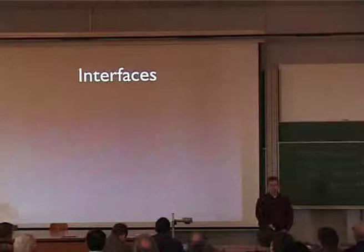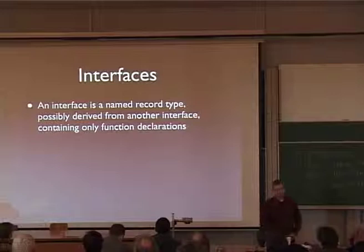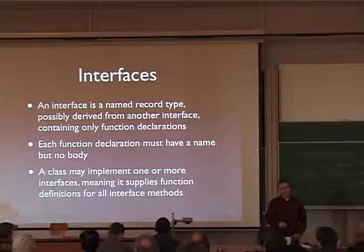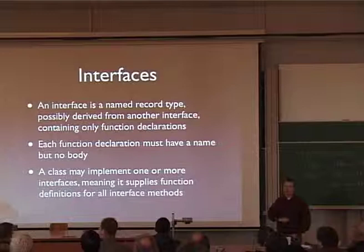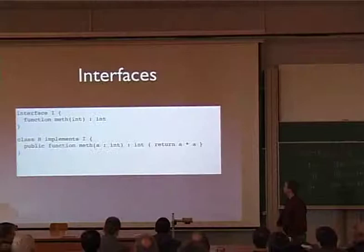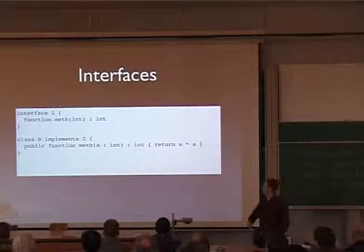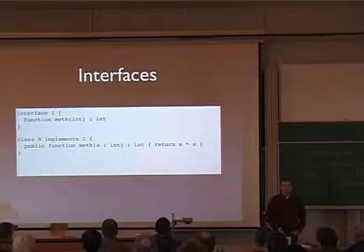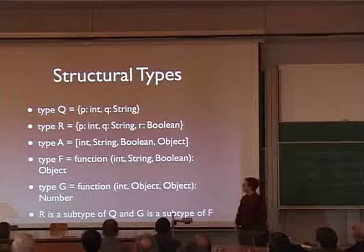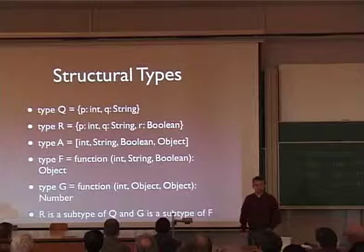Interfaces are like classes except there's no implementation. The key difference — very similar to Java — is that any class can only extend one other class, but can implement multiple interfaces. So with an interface, you're trying to define a contract. You're not defining any implementation of how it actually works. You declare an interface, which is simply a set of method signatures, and then have a class or multiple classes which would implement that interface. You can use structural types as well — declaring types as just either a function or a series of data members with no implementation.